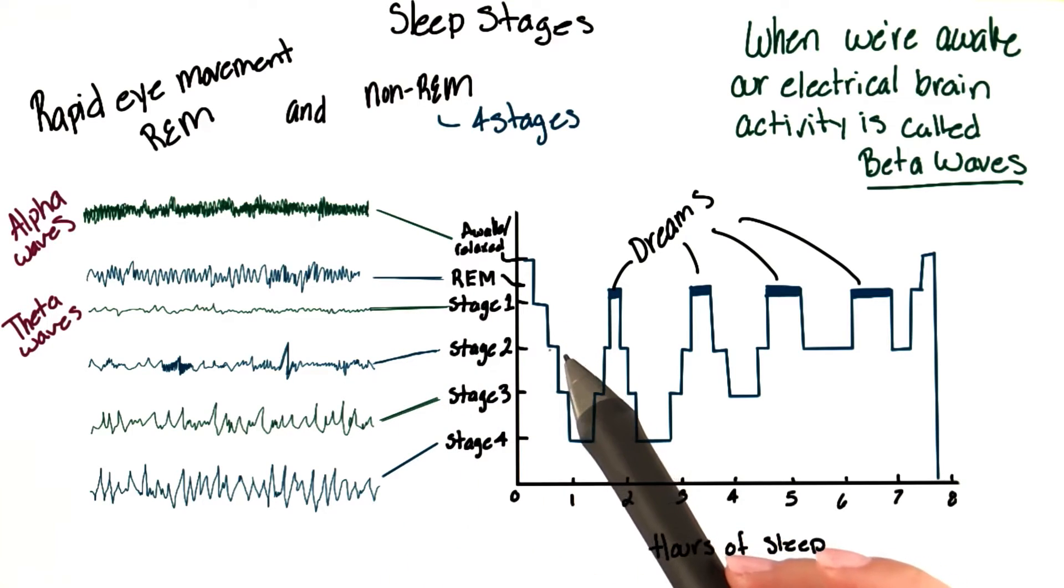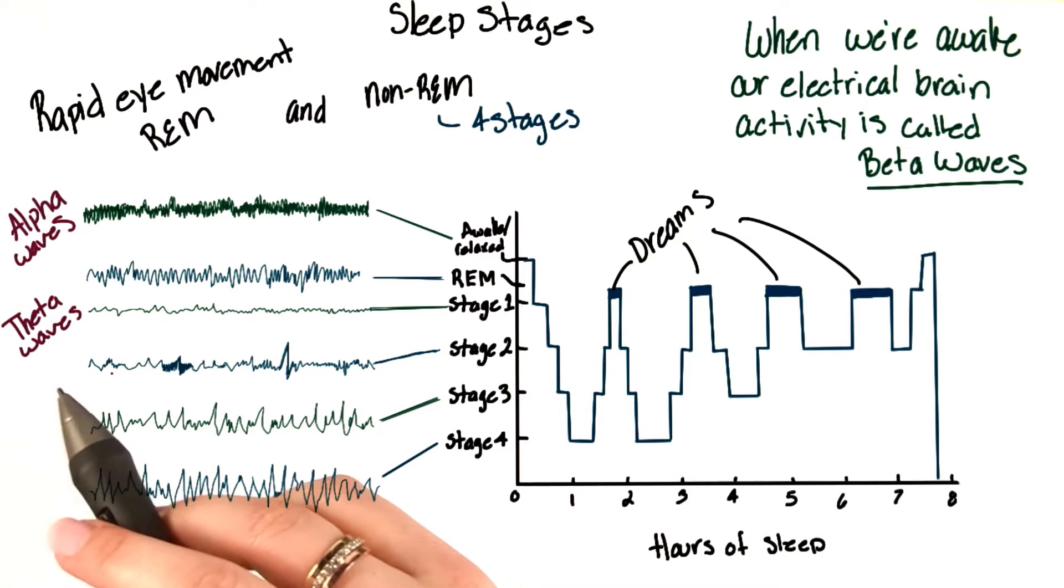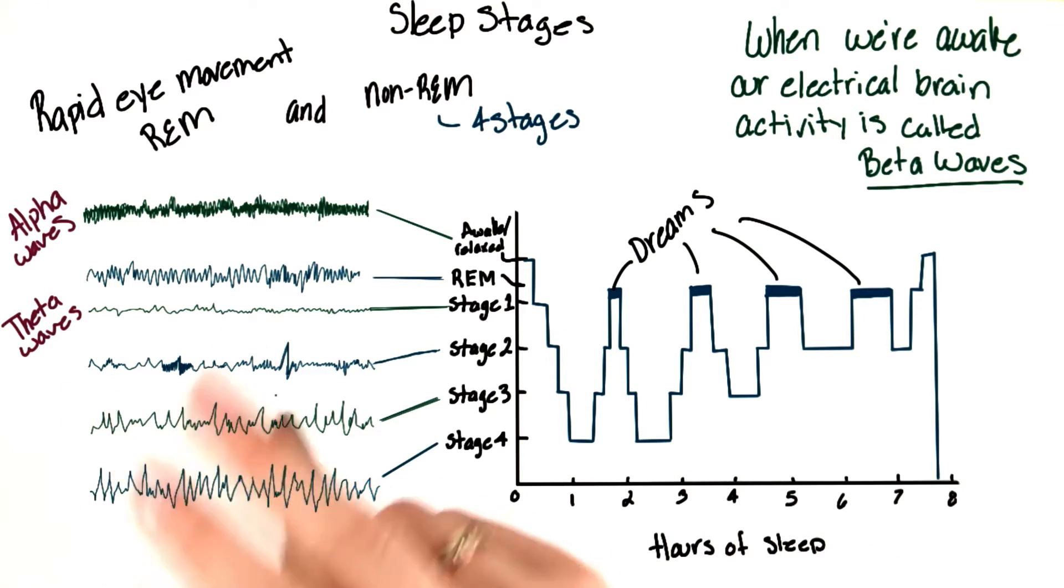After about seven minutes or so, we're going to move from stage one to stage two. Now, during stage two, which is also a type of theta wave, we're going to see two interesting things in our electrical brain activity.